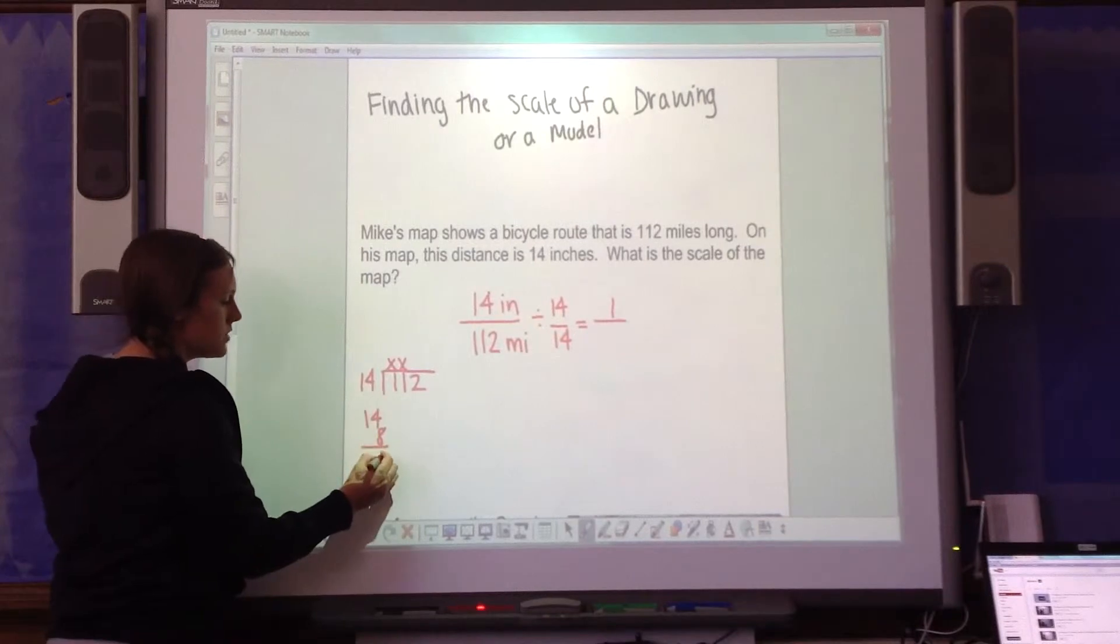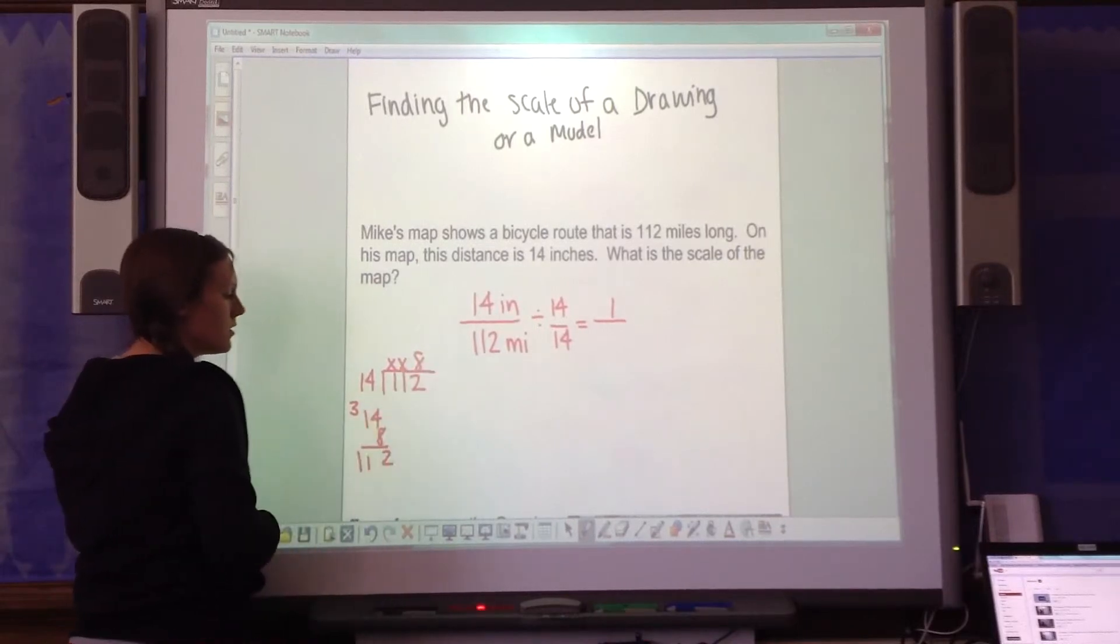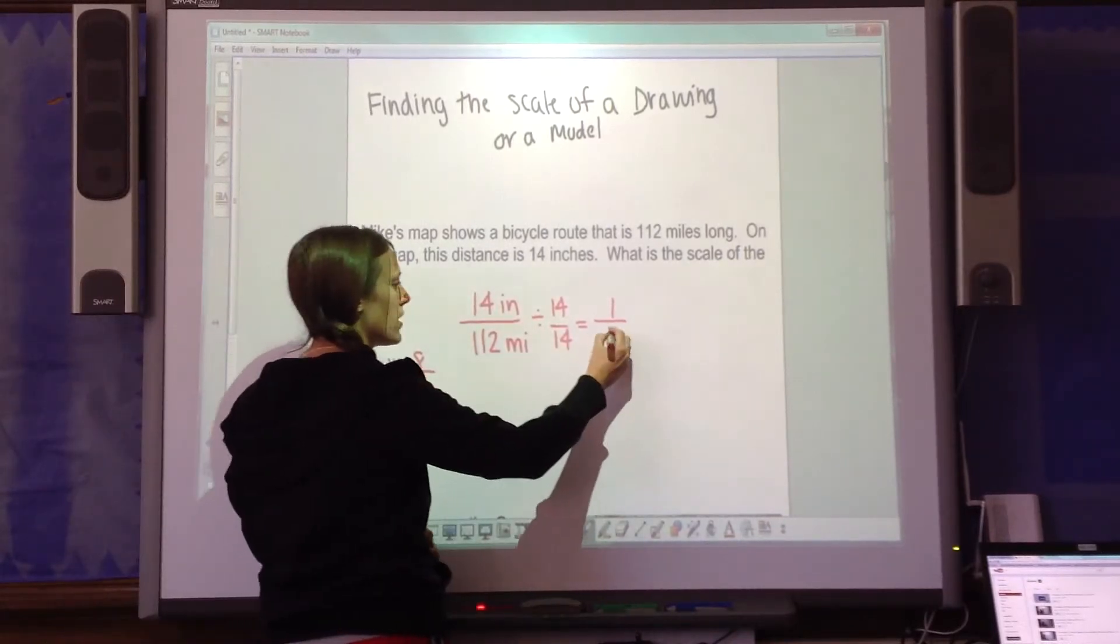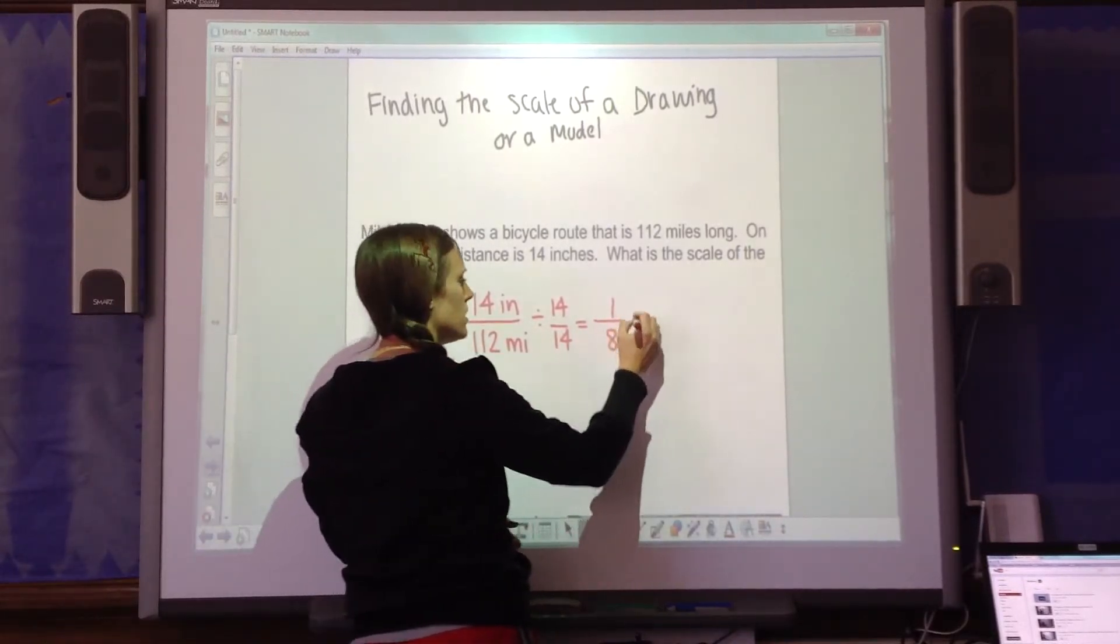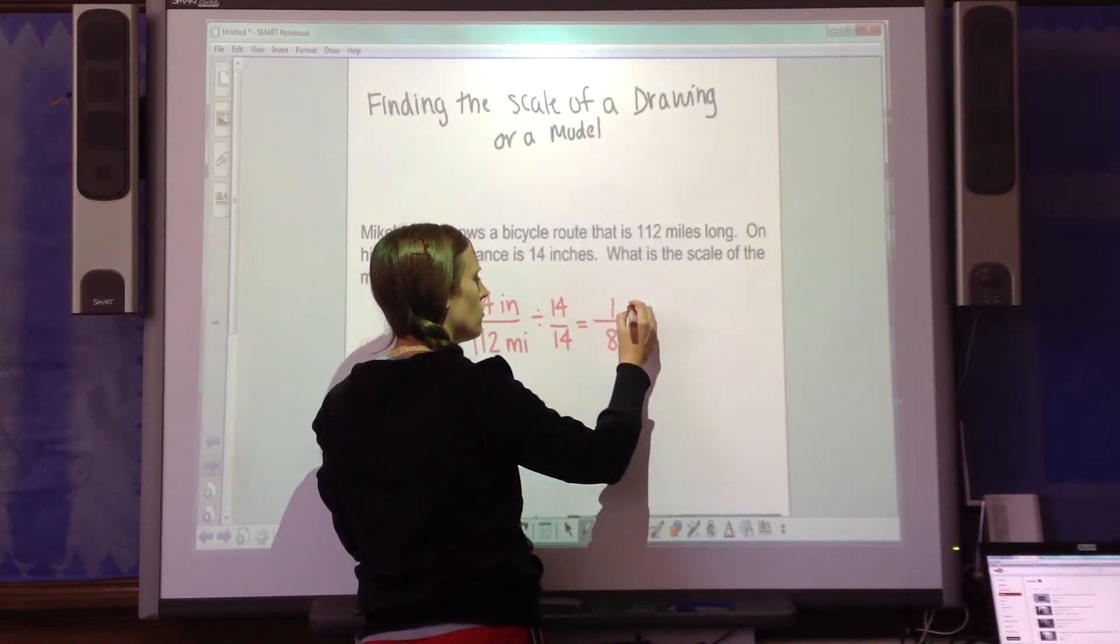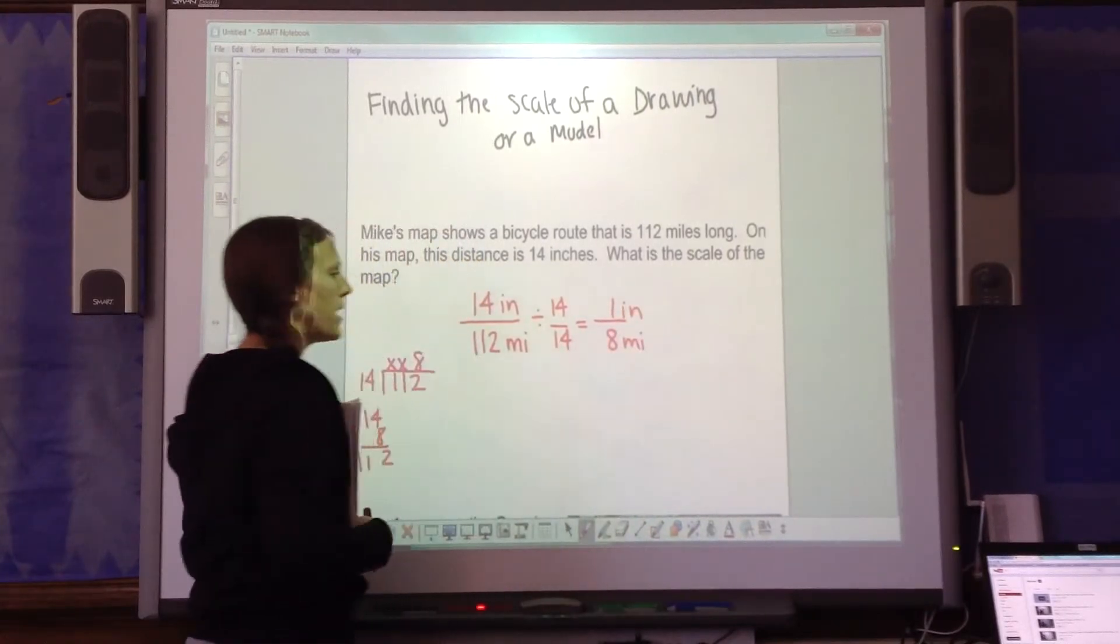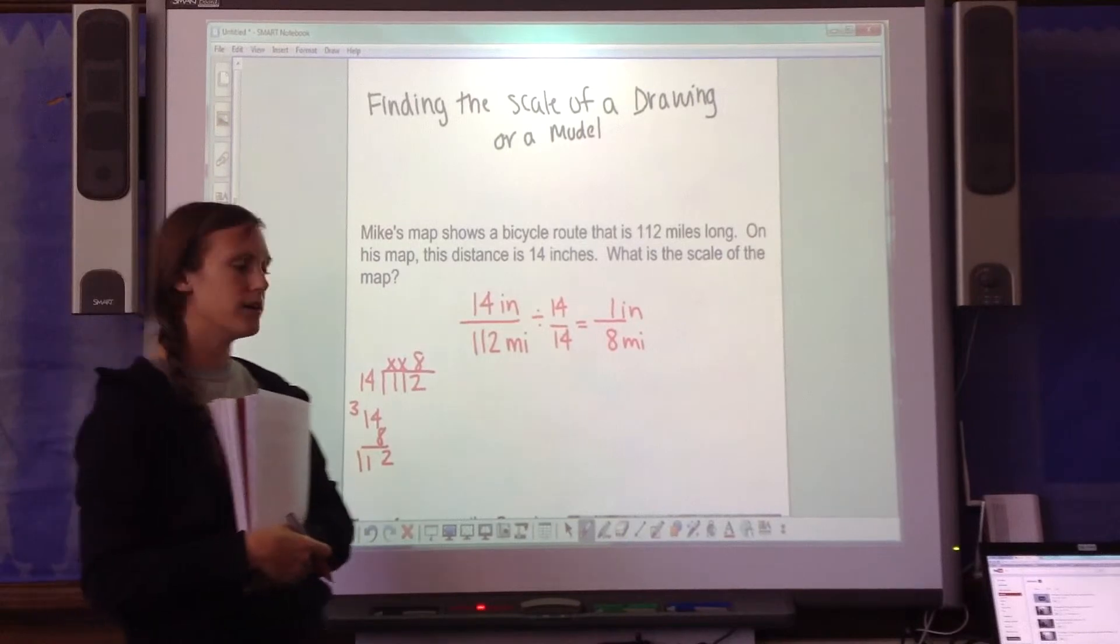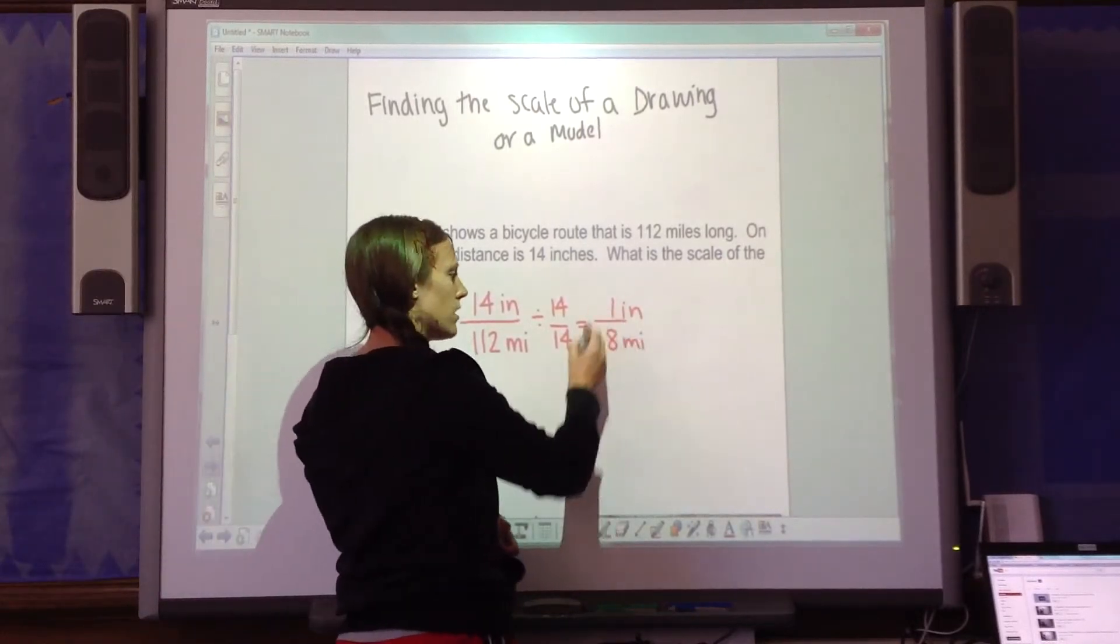4 times 8 is 32. 8 times 1 plus 3 is 11. So I get 8. For every 1 inch on the map, it represents 8 miles. So this is your scale right here.